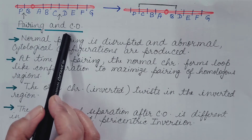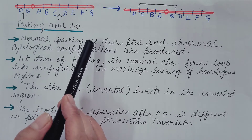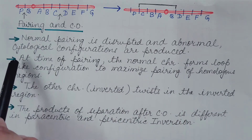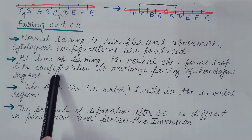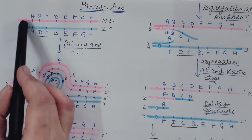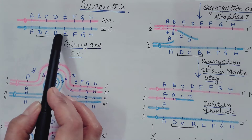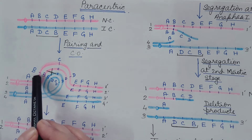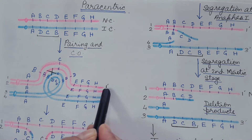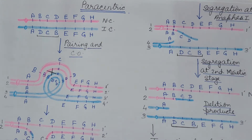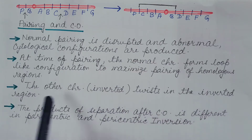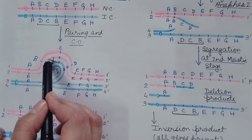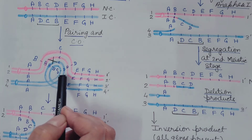Now let us see how pairing and crossing over takes place between the normal chromosome and the chromosome containing the inverted segment. The normal pairing is disrupted and abnormal cytological configurations are produced. At the time of pairing, the normal chromosome forms a loop-like configuration to maximize pairing of homologous regions, while the chromosome having the inverted segment twists in the inverted region to maximize pairing.